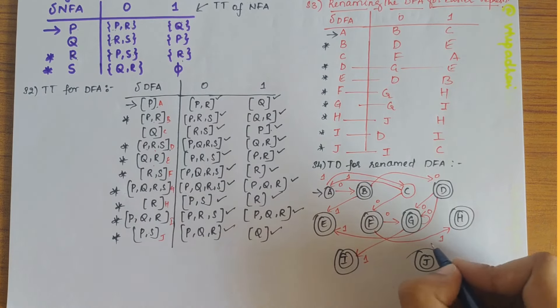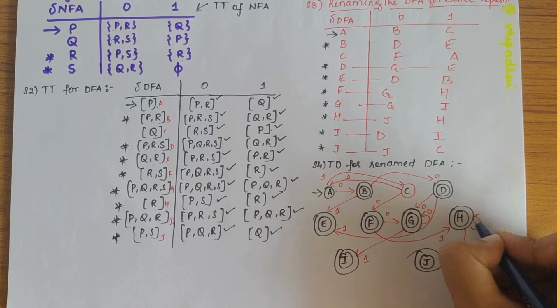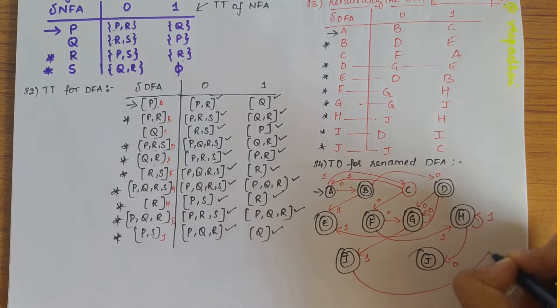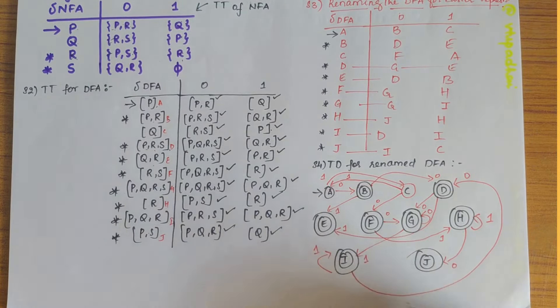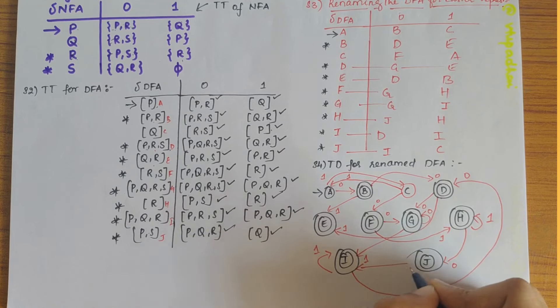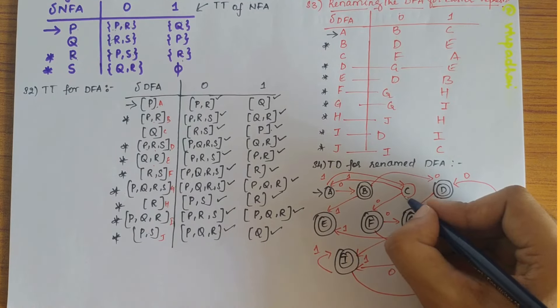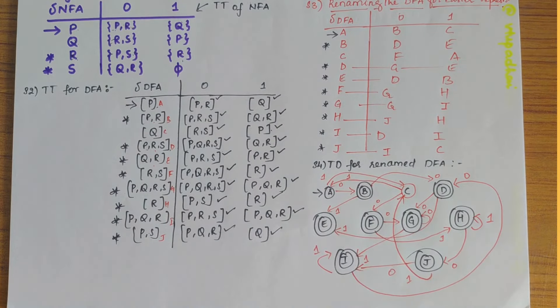H on 0 gives J, D on 0 gives D, so D is there, and I on 1 gives I itself. J on 0 gives I, and J on 1 gives C. So C is here, how do we show C, okay fine. So yeah, we have drawn the transition diagram for renamed DFA.